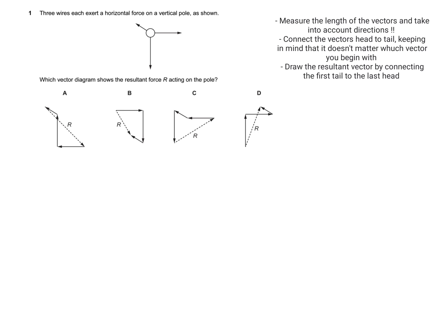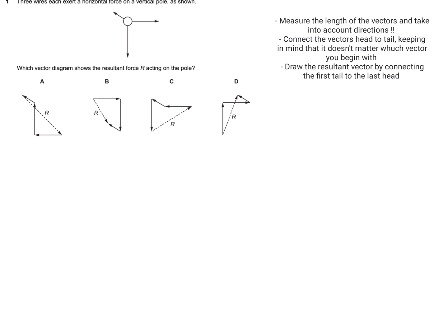We're given a figure of a vertical pole on which three horizontal forces are exerted, and we're asked which vector diagram shows the resultant force R acting on the pole.